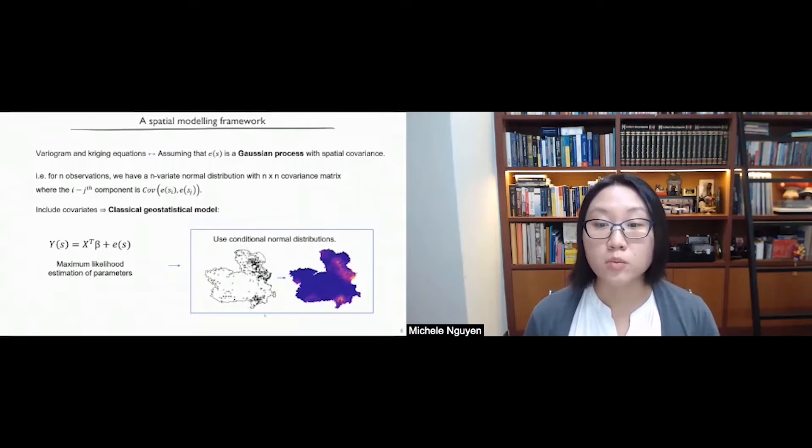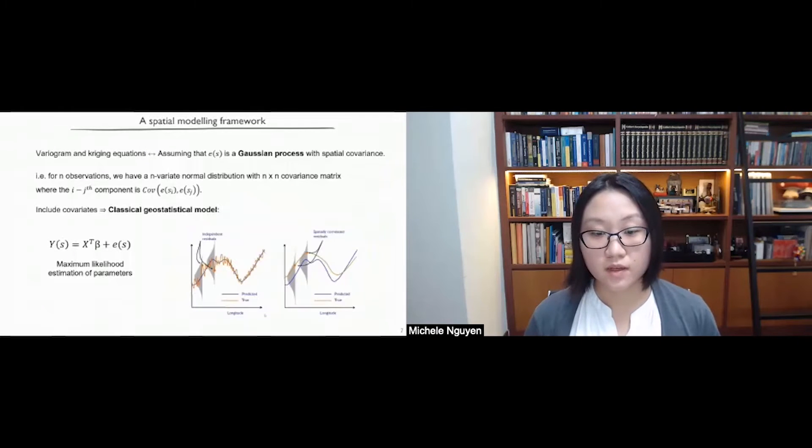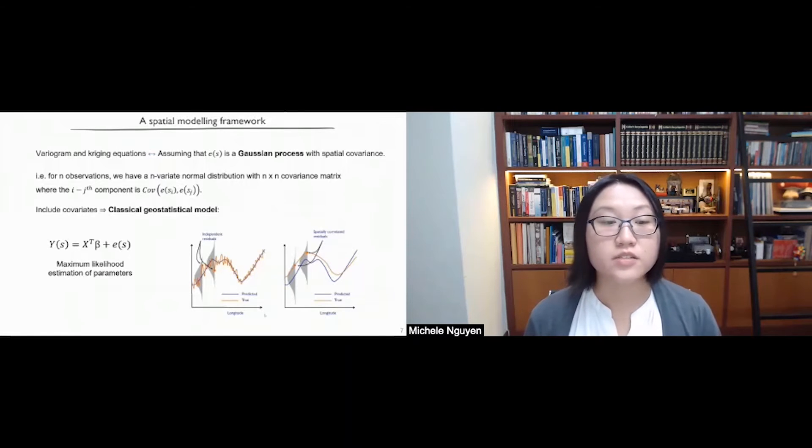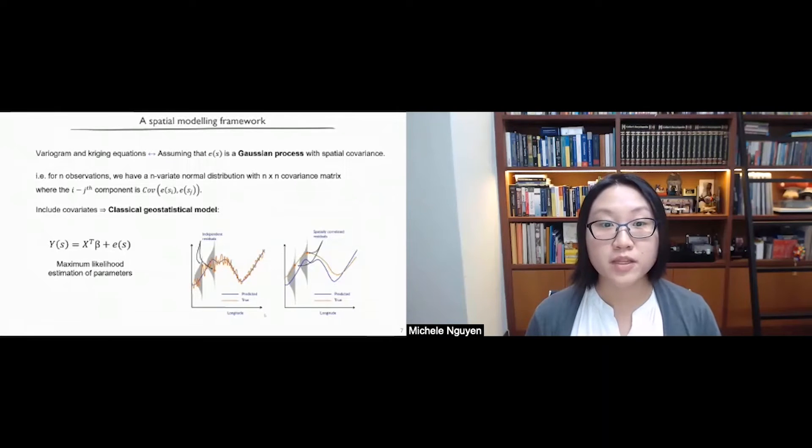So the formula for this classical geostatistical model is very similar to that of a linear model or linear regression, which many of you might have come across. But the key difference here is in the distributional assumption for e. So in a linear model, we assume that e is an independent identically distributed normal random variable. However, here we explicitly model the spatial dependence present.